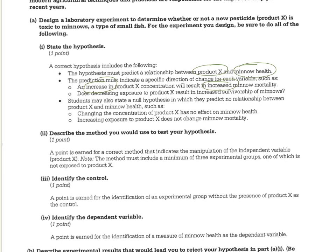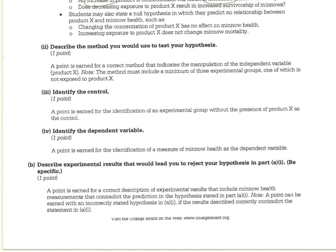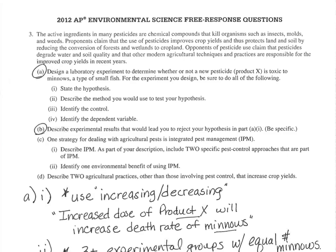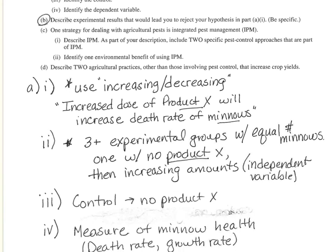You can go ahead and look through the rubric here and pause the video to review it, but on the next slide I'm going to show you a breakdown. For AI, what you want to make sure you're doing in a hypothesis is using 'increasing' or 'decreasing.' For example: 'An increased dose of product X will increase the death rate of the minnows.' A lot of students will say 'product X will kill minnows,' but that is not very precise or collegiate language. A more precise phrasing is: 'increasing the dose will increase the death rate.' Those are the kinds of words you want to use.